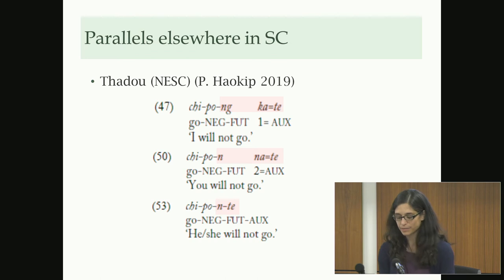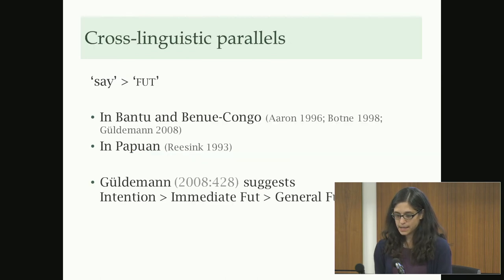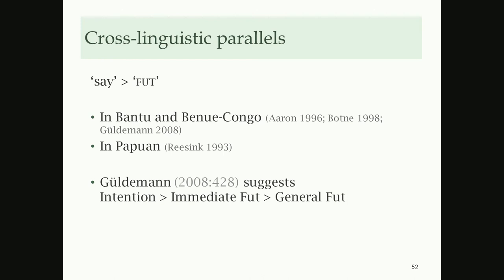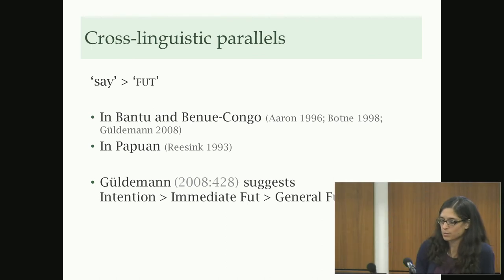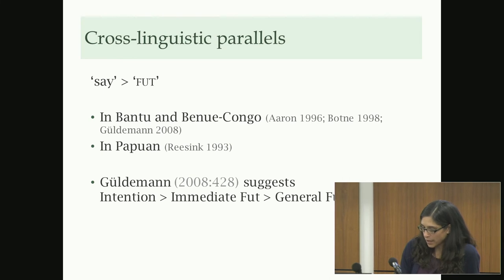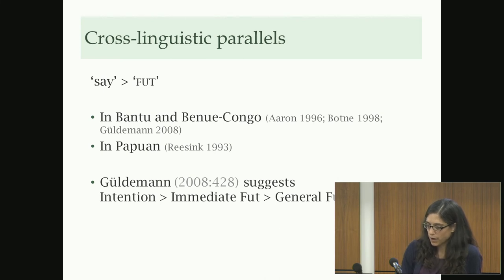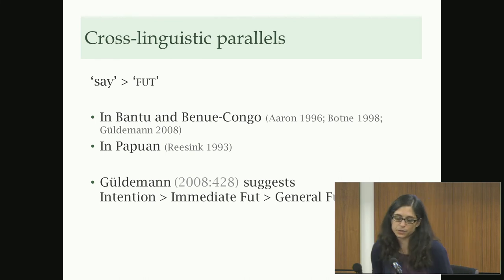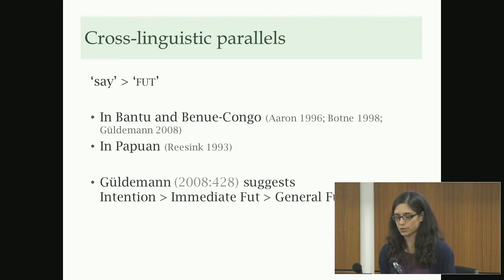The development from direct speech to future is not attested in Bybee et al.'s diachronic typology of tense-aspect-mood systems, but it is found in other languages — quite robustly in various branches in Africa and in Papuan languages. Güldemann's comparative work across Africa provides enough data to suggest a pathway: it again starts with intention, which is apparently a common starting point for all future constructions, going through immediate future and then becoming a general future.